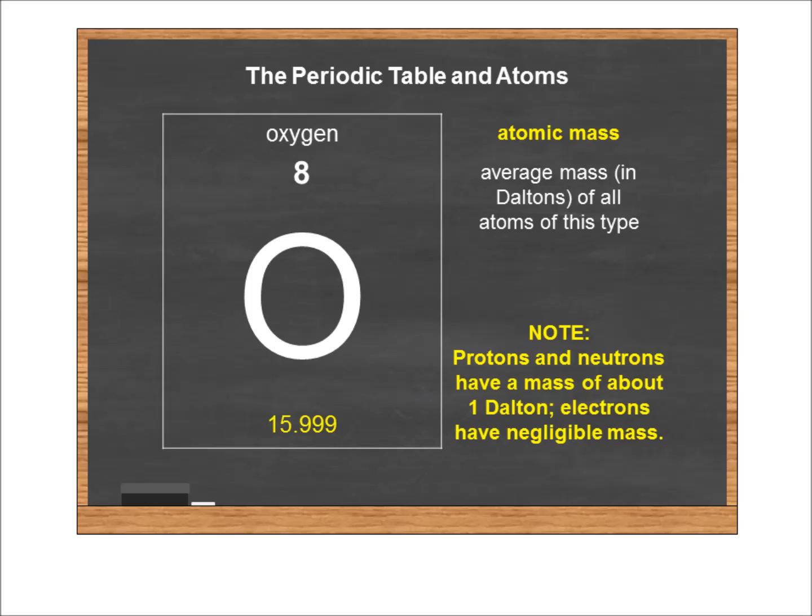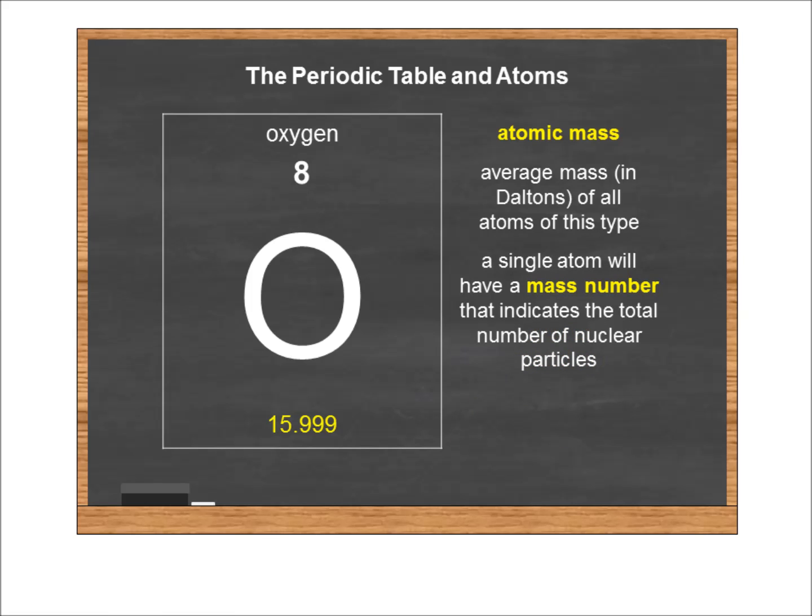Protons and neutrons have a mass of about one Dalton each, and electrons have what is, in effect, negligible mass because they're so tiny. So in essence, when we talk about a mass number for a single atom, which will be a whole number, that's the total number of particles in the nucleus.